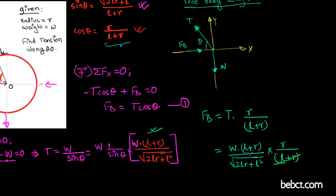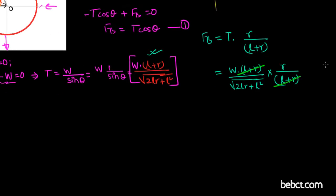L plus R is going to cancel this L plus R, so we are left with the value of F_B which is equal to WR divided by square root of 2LR plus L squared.